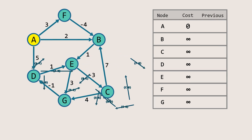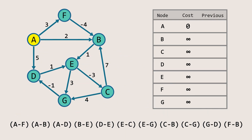Next, we have to perform the relaxation of the edges. For each edge, the order in which we check them does not matter — the algorithm will give the same result. Let's start with the first edge in our order, the edge AF. The cost of node A is zero and the weight of the edge is three, giving a total of three. This is less than the current cost of node F, which is infinity. So we update the cost of node F to three, and set node A as the previous node for node F.